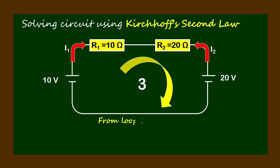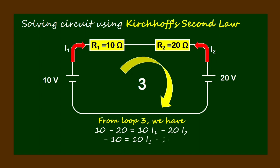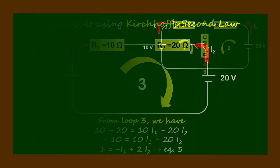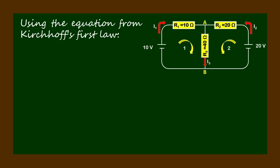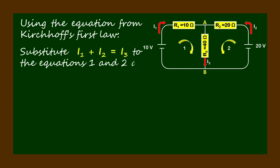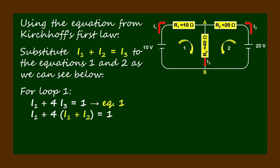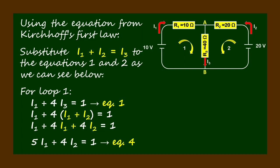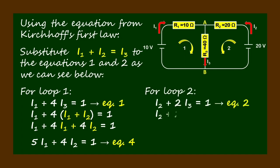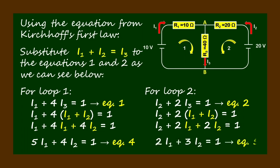Using the equation from Kirchhoff's first law, substitute I1 plus I2 equals I3 into equations 1 and 2. For loop 1, we get 5·I1 plus 4·I2 equals 1 (equation 4). For loop 2, we get 2·I1 plus 3·I2 equals 1 (equation 5). Subtracting equation 5 from equation 4 and solving for I1, we get I1 equals negative 1/3 · I2.